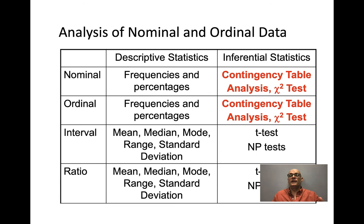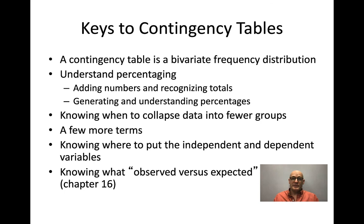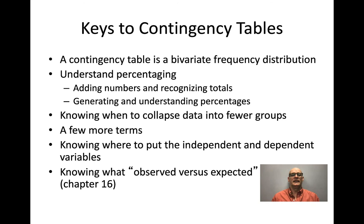When building a contingency table — sometimes called cross tabs in Excel — you need to understand how to display data when comparing two variables. Key things to know: how to generate percentages, when to collapse comparable categories together, where to put the independent and dependent variable, and what 'observed' versus 'expected' means.